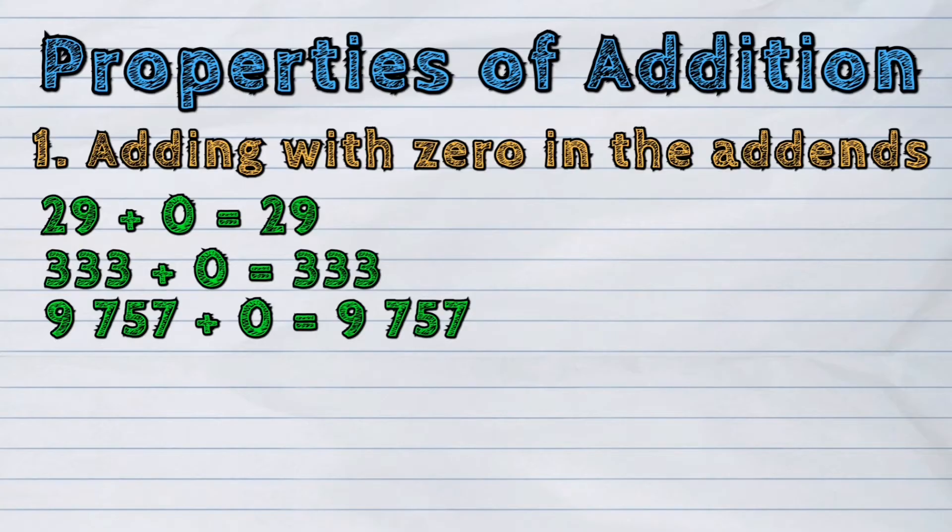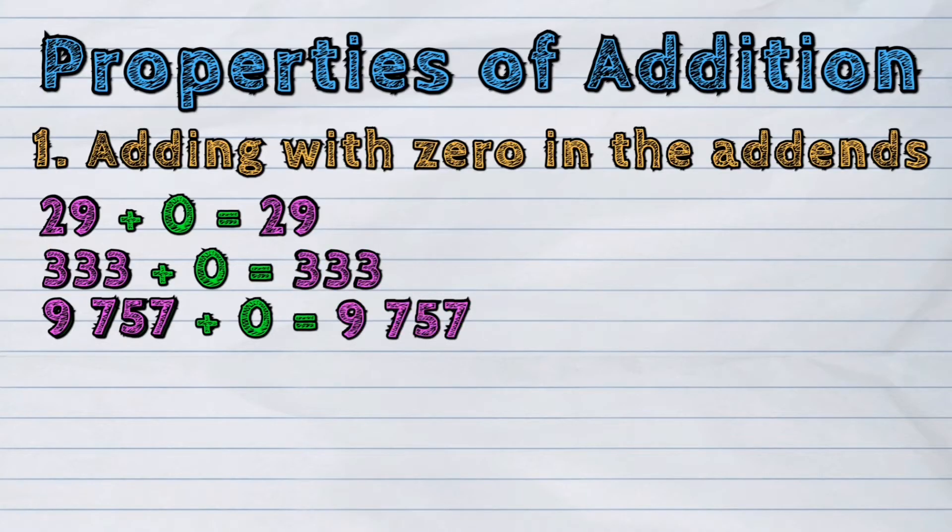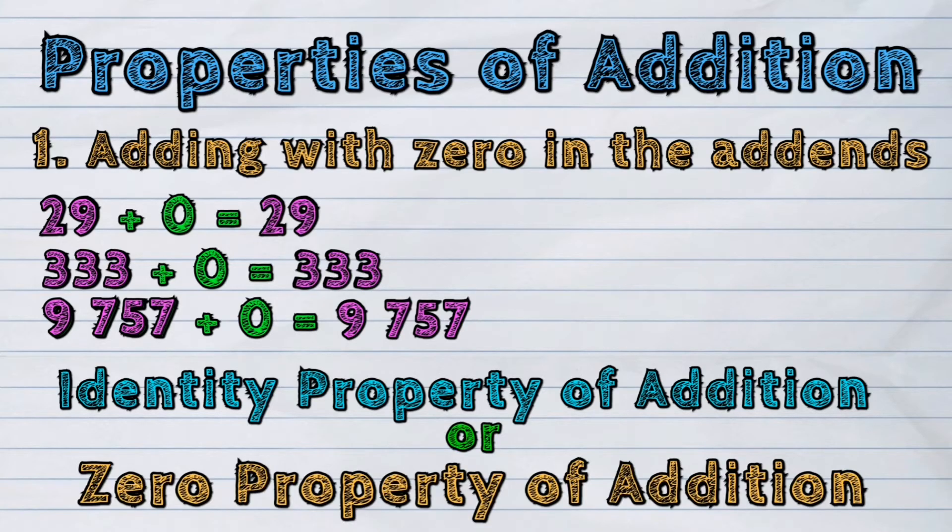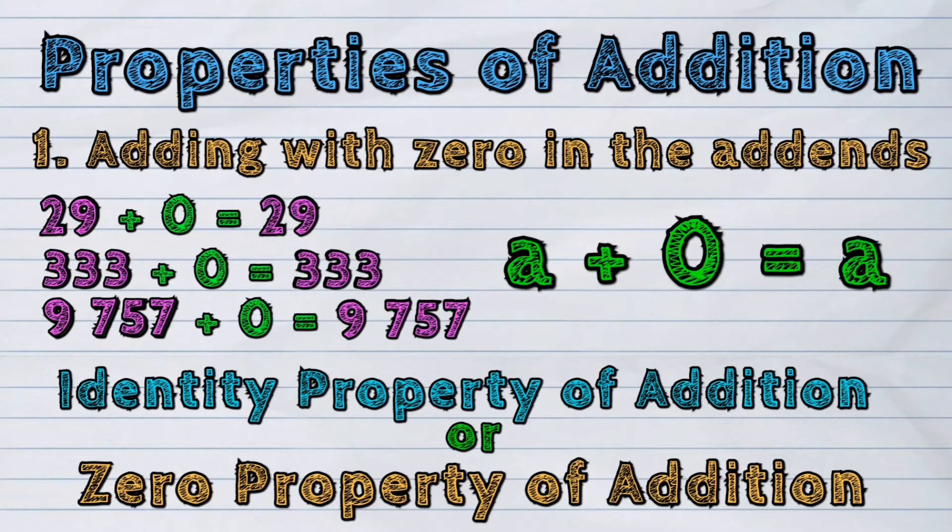We noticed that any number added to zero gives the same number. This is called the identity property of addition or the zero property of addition. The format is a plus zero is a.